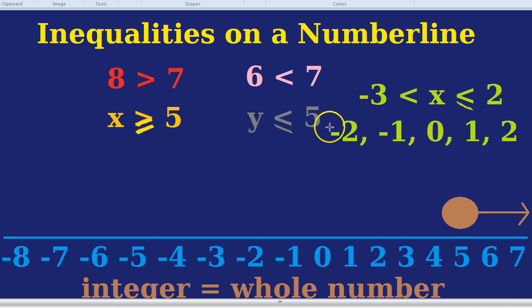How about the inequality given before? Minus 3 is less than x which is less than or equal to 2. Well, the 2 is definitely going to be a filled-in circle. But the minus 3 is not going to be filled in because it's just less than. So what we draw is an empty circle. At minus 3, we're going to draw an empty circle.